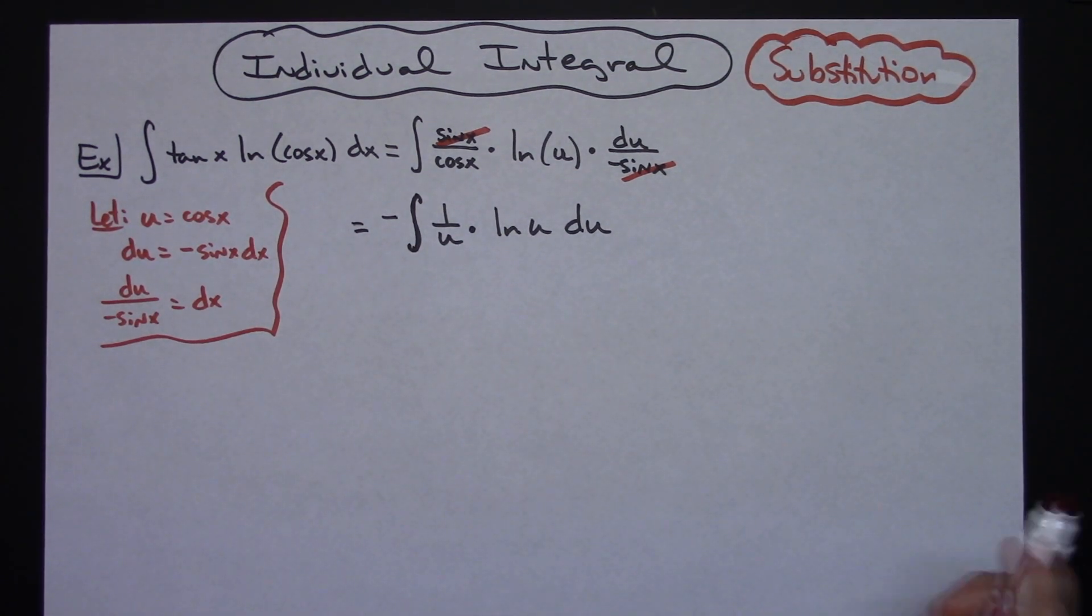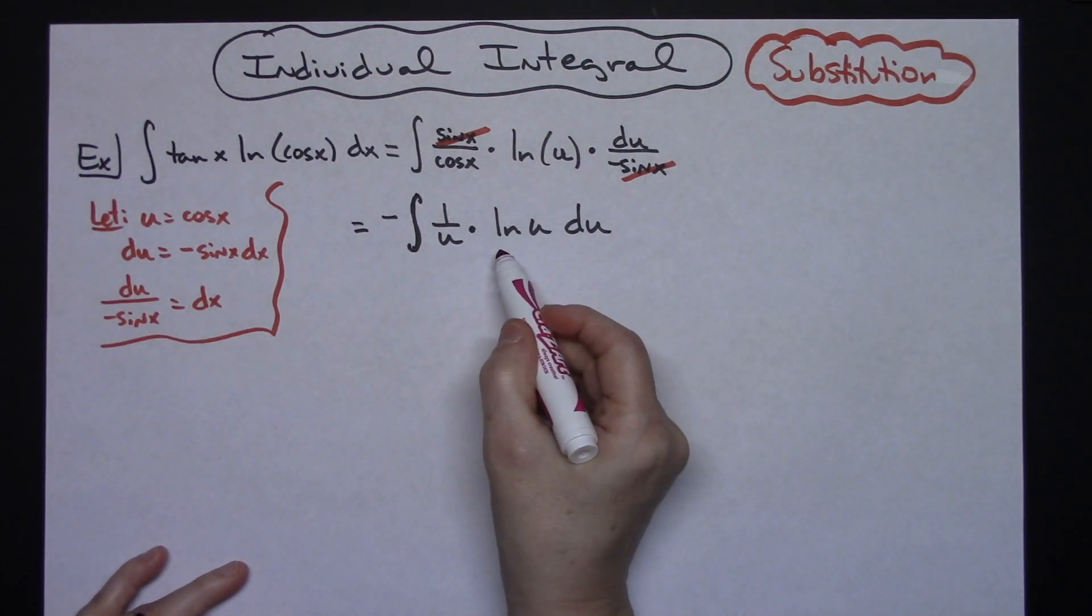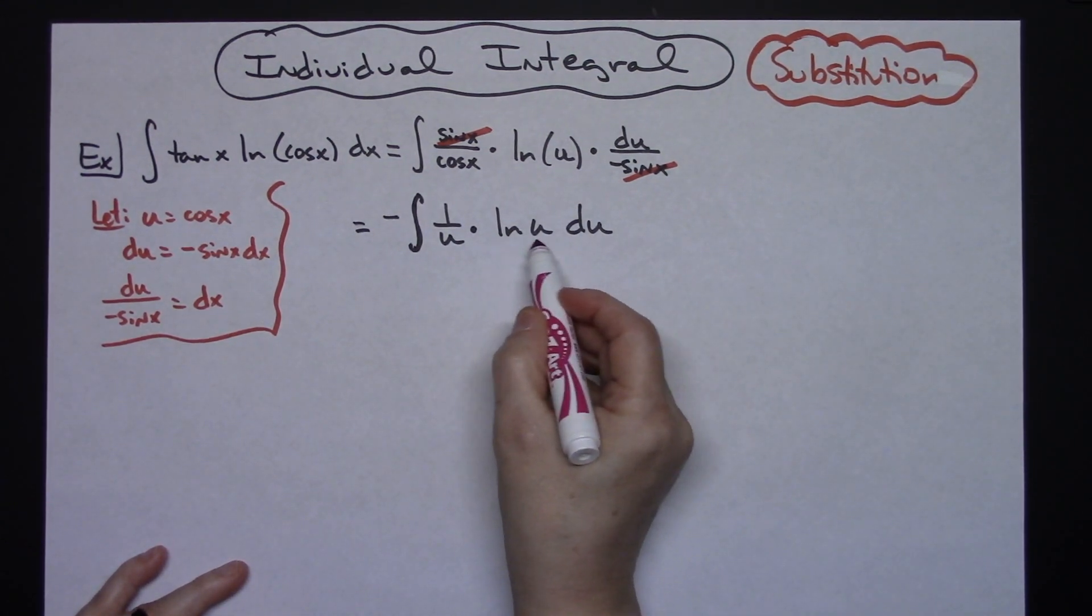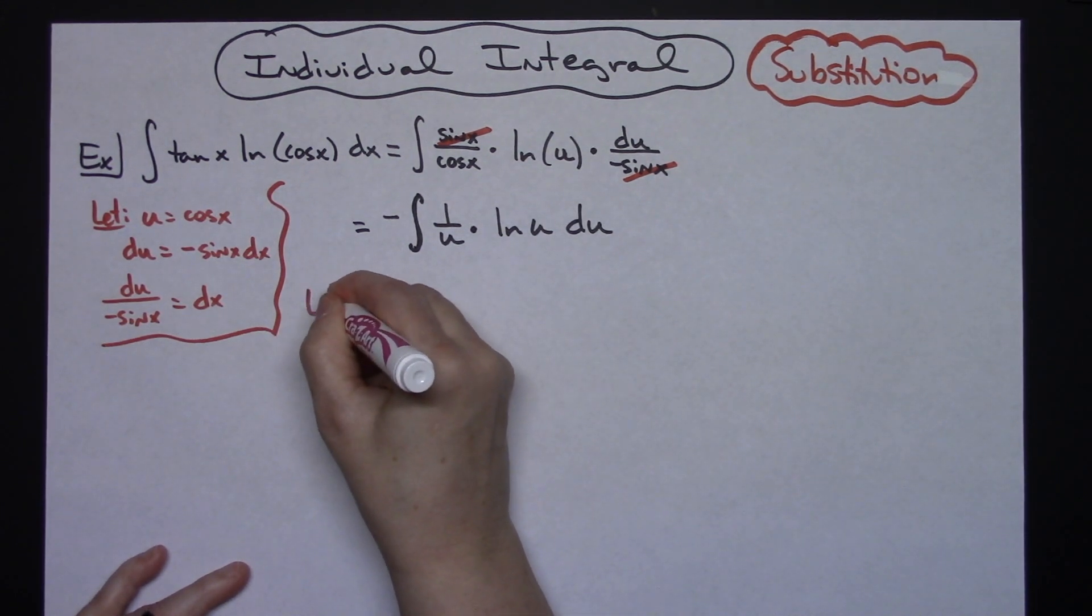Alright, this time what I'm going to do is I'm going to let my, let's just pick another variable t. Let's let that be the natural log of u. So I'm going to do a second substitution. I'm going to let t equal the natural log of u.